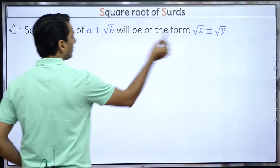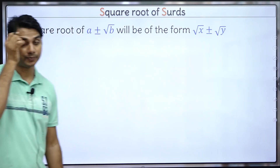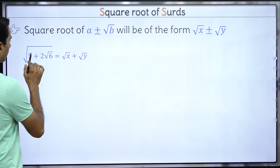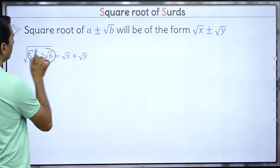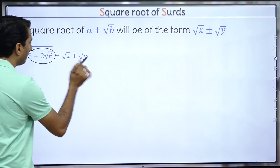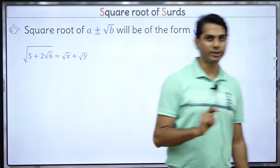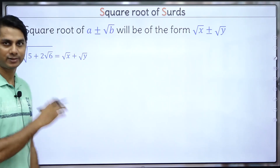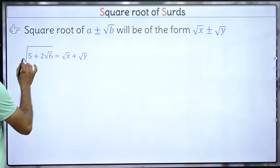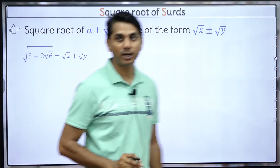If the expression inside has a plus, then the square root form will also have plus; if it has minus, it will also have minus. For example, if I have to calculate square root of 5 + 2√6, then its square root will be of the form √x + √y.